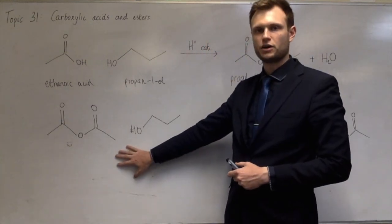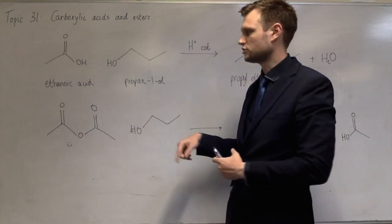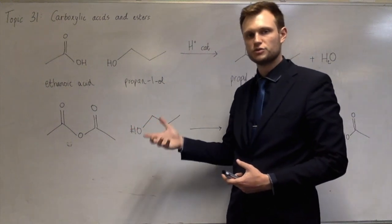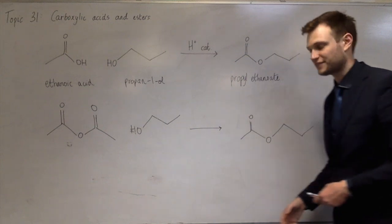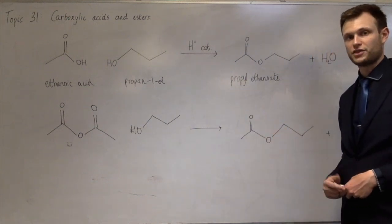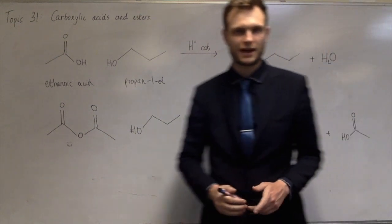Okay, this is ethanoic anhydride. It looks like two ethanoic acids, but with an H2O removed from the middle, which is where the anhydride comes from, so losing water. So we're reacting with the same propan-1-ol and it makes the same ester. Propyl ethanoate is still made, but instead of producing water, it makes ethanoic acid. That's the other product.